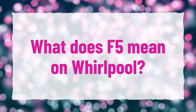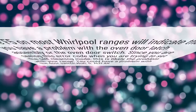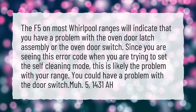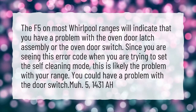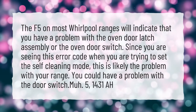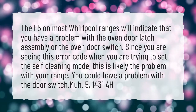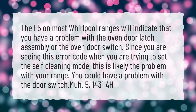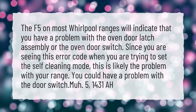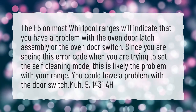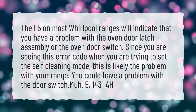What does F5 mean on Whirlpool? The F5 on most Whirlpool ranges will indicate that you have a problem with the oven door latch assembly or the oven door switch. Since you are seeing this error code when you are trying to set the self-cleaning mode, this is likely the problem with your range. You could have a problem with the door switch.